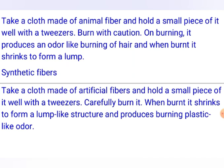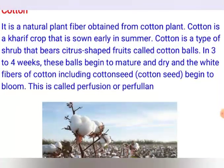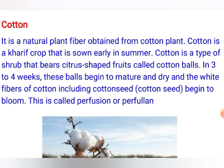Cotton is a natural plant fiber obtained from the cotton plant. The cotton plant is a kharif crop — that is, a crop sown in summer or in the rainy season or just prior to the rainy season. The cotton plant is a type of shrub, with several branches rising from near the ground, not of much height — only about four to six feet. Because of its size, the cotton plant is categorized as a shrub, and it bears citrus-shaped fruit.